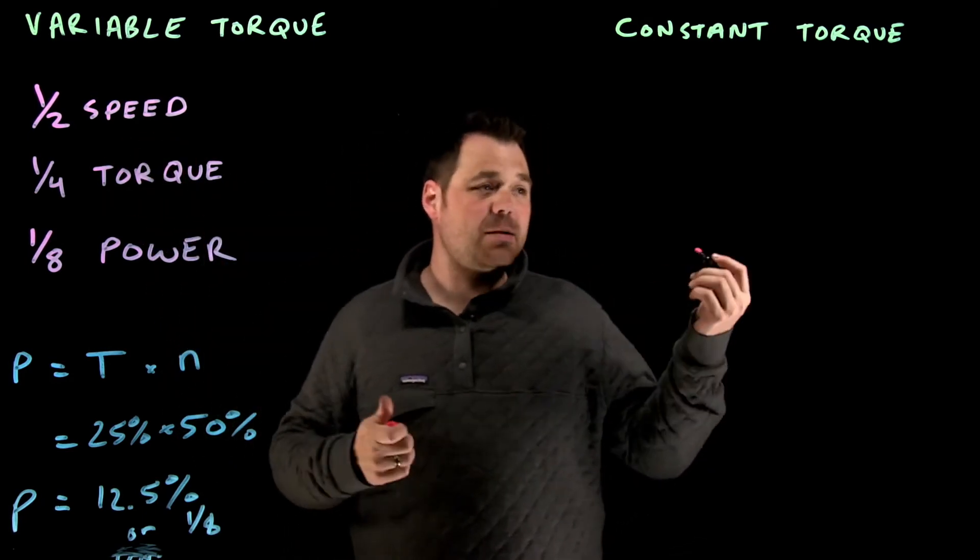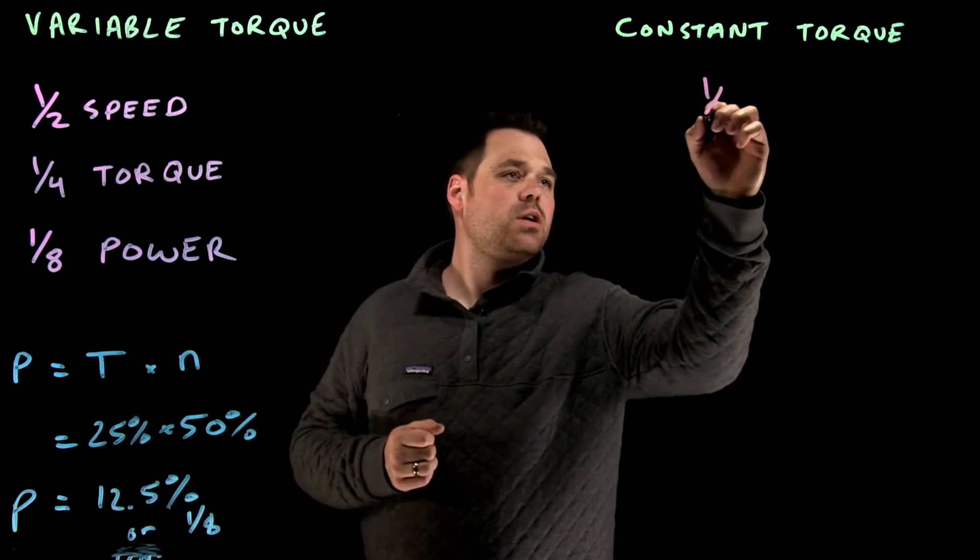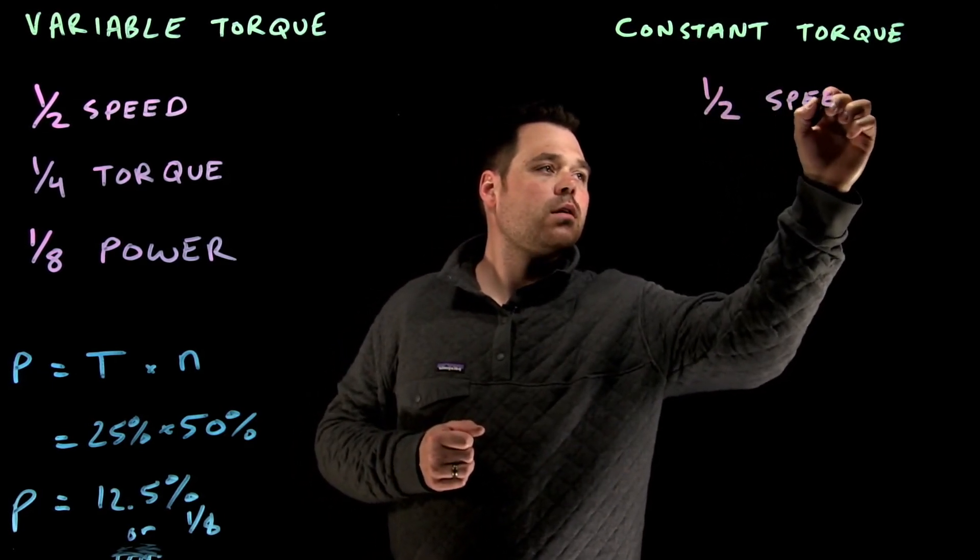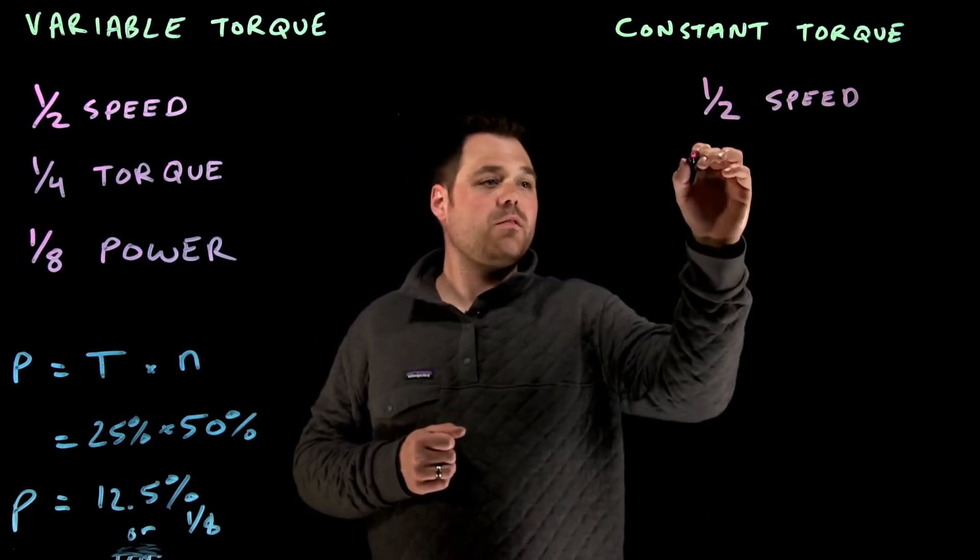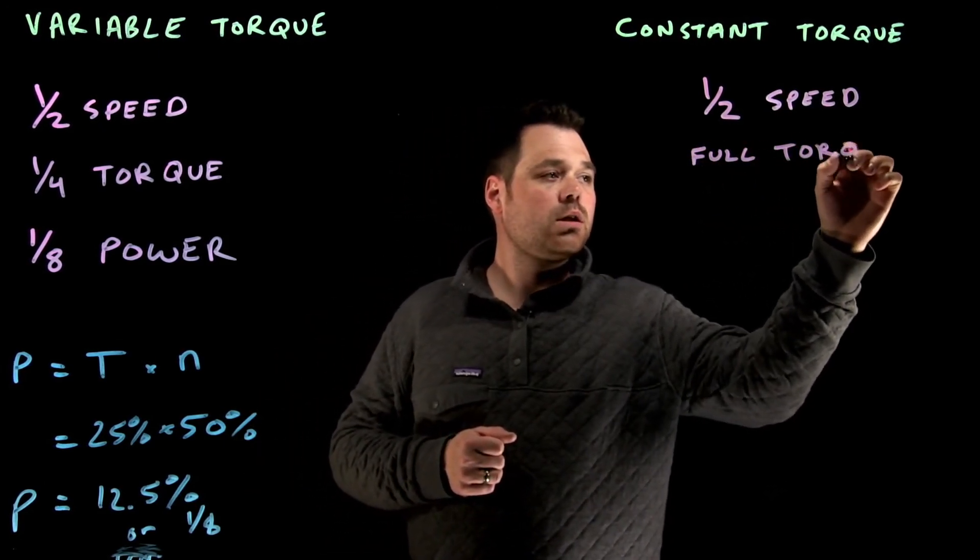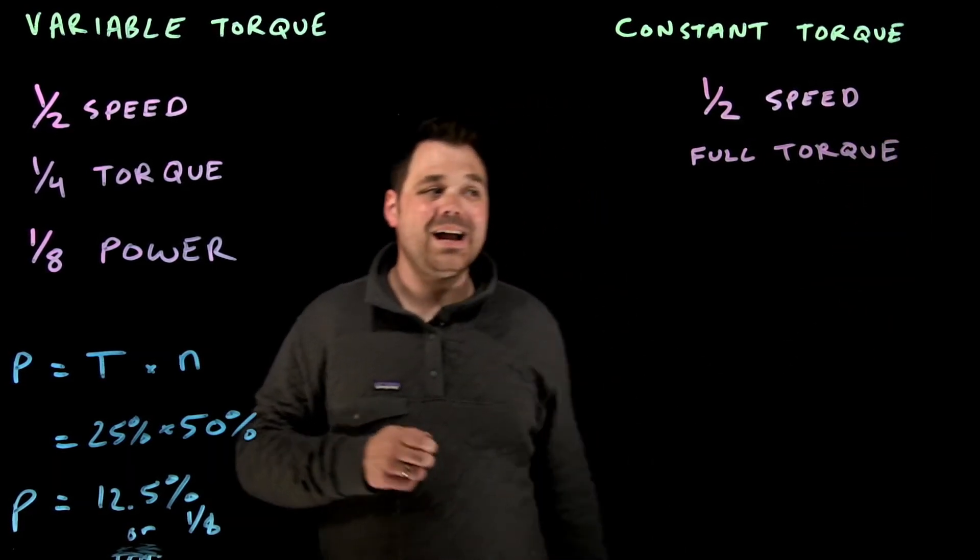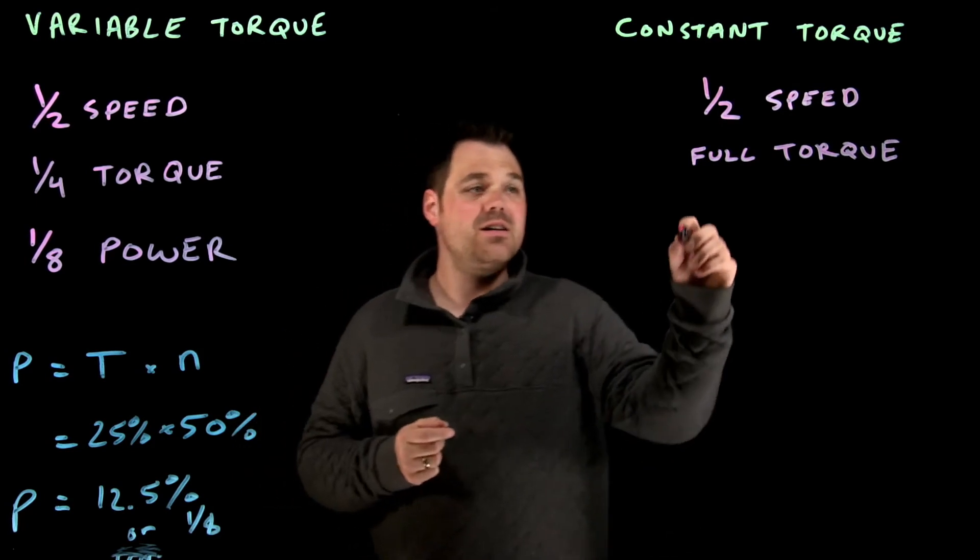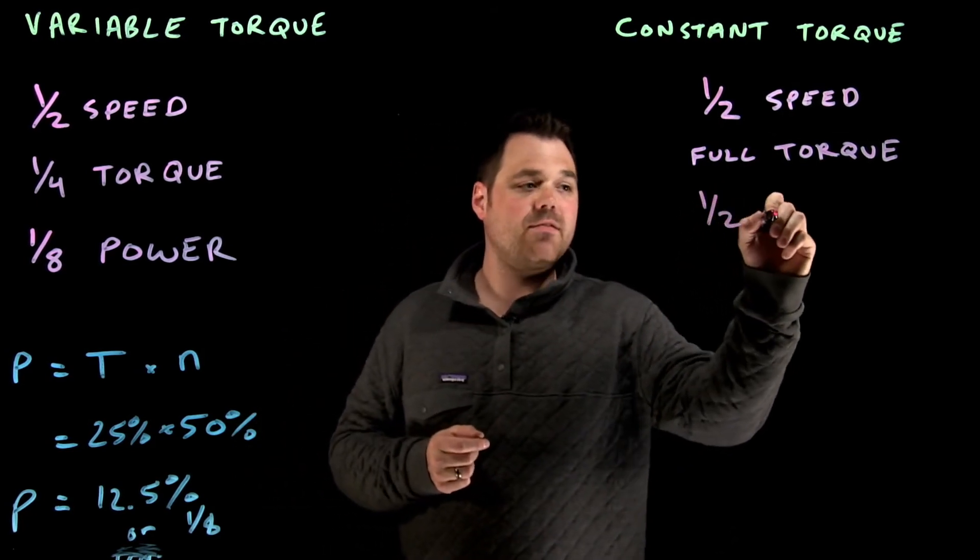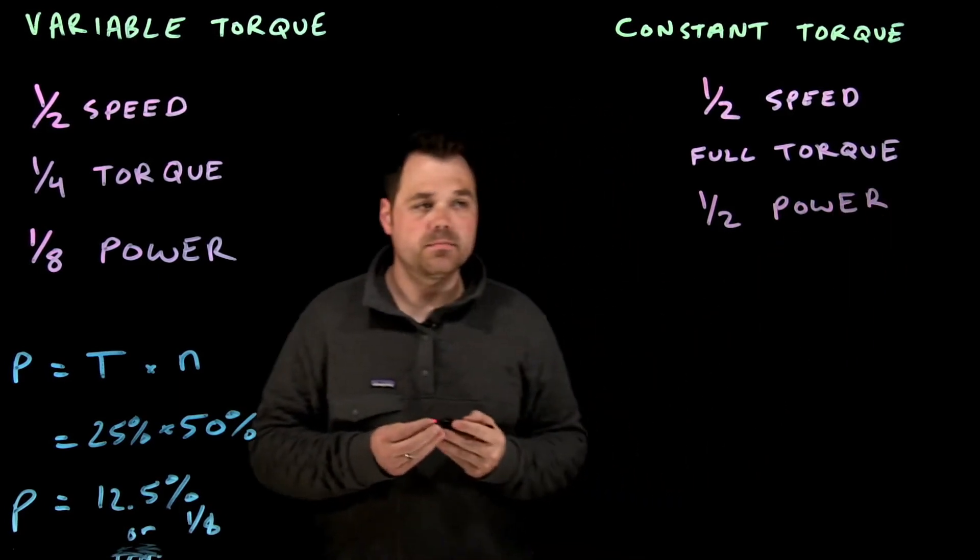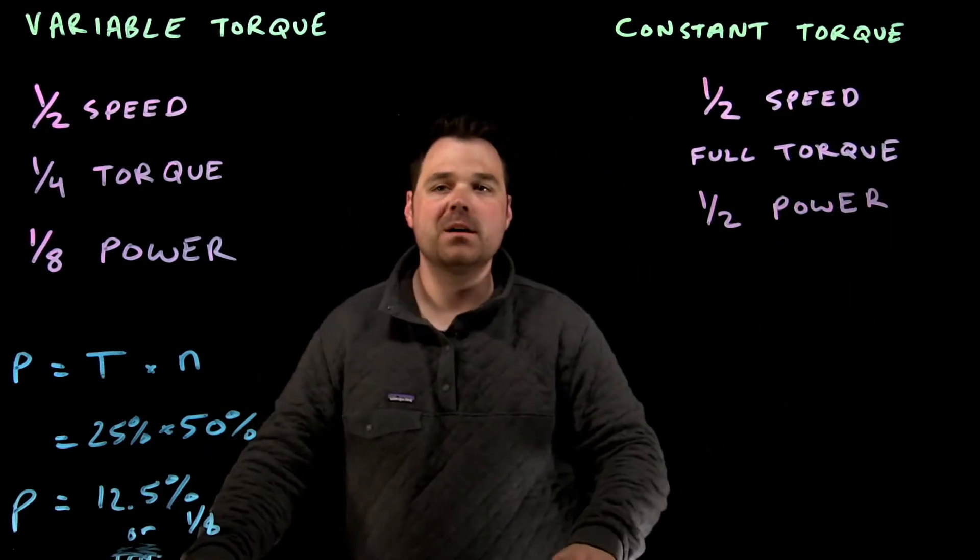Using our half speed as an example, if I'm talking constant torque, if I was at half speed, I would still require full torque. But, I actually am still going to see a little bit of energy savings in that I would only require half the power. Let's talk about how that works out.